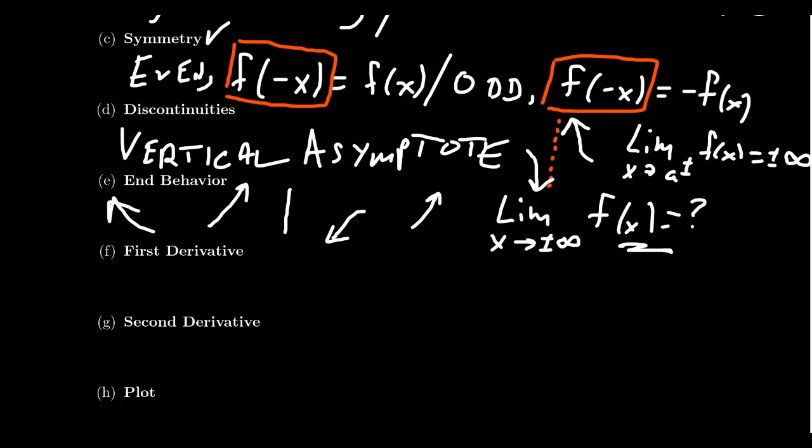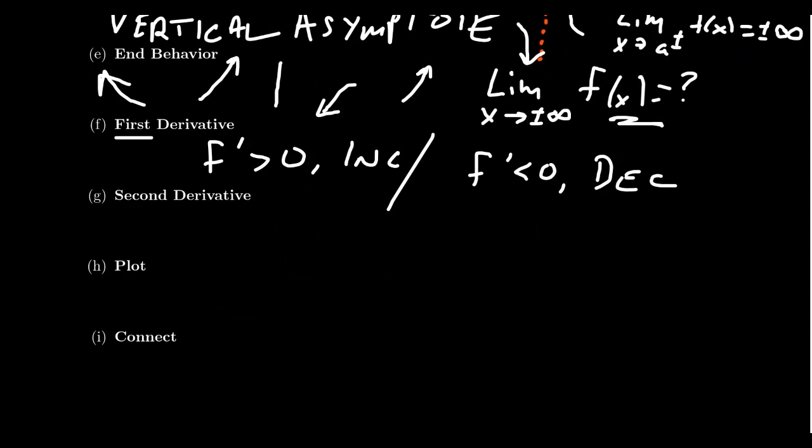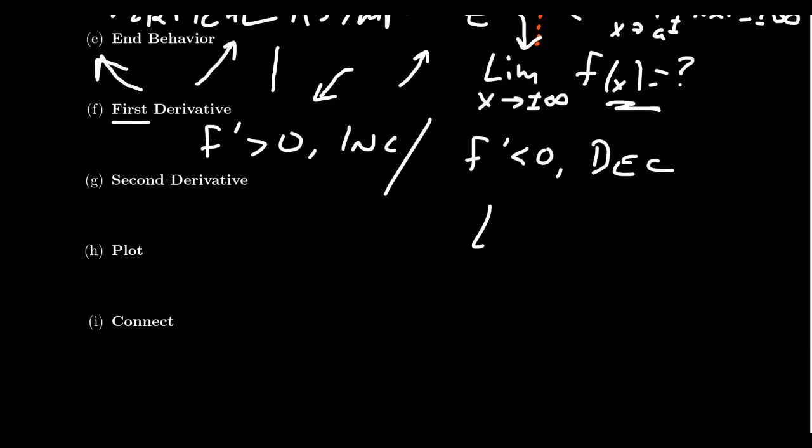What does the first derivative have to do with graphing a function? Well, as we've seen before, whenever your first derivative is positive, this is exactly when your function is increasing and when your first derivative is negative, this is exactly when your function is decreasing. So this type of monotonic behavior is essential to know as we graph our functions. And we also want to keep our eye out for extrema. Do we have a local maximum, a local minimum? We should put those on the graph. If they're there, extrema will be something I absolutely look for on graphs.